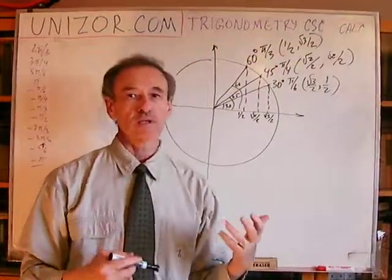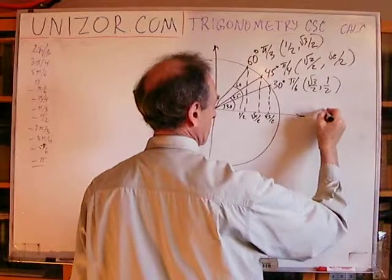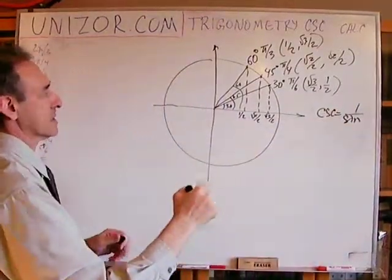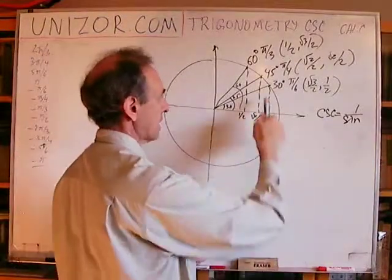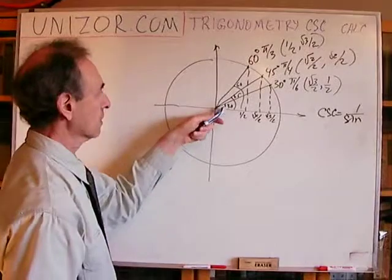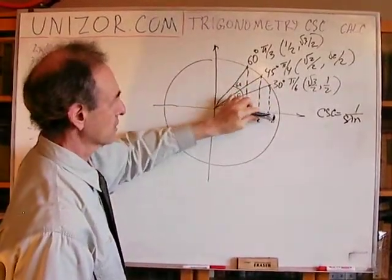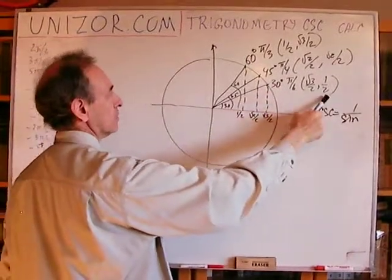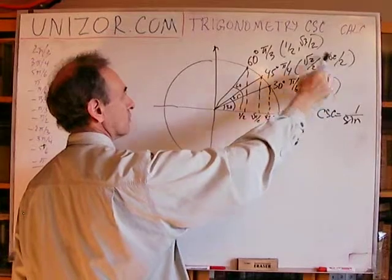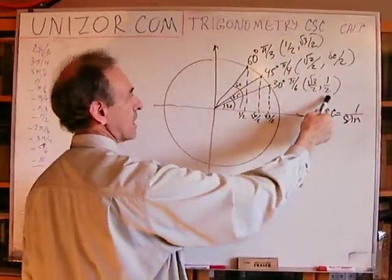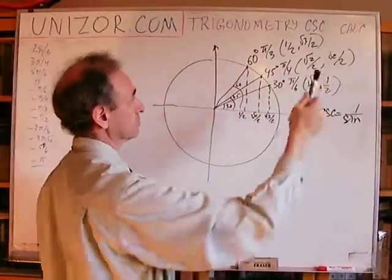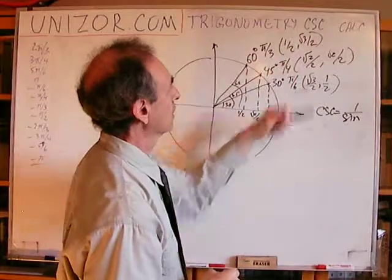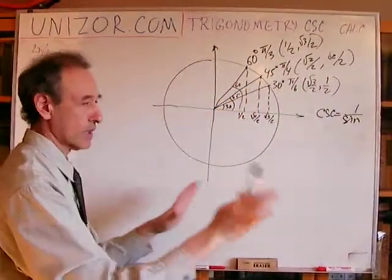Now, what is a cosecant? Cosecant is one over sine. Sine is the ordinate in the unit circle. So for 30 degrees, the ordinate is one-half, giving cosecant of 2. For 45 degrees, ordinate is square root of two over two, so cosecant is two over square root of two, which is square root of two. For 60 degrees, the ordinate is square root of three over two, so cosecant is two over square root of three, which is two square root of three over three. These are the cosecants for the first-quadrant angles.